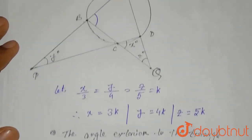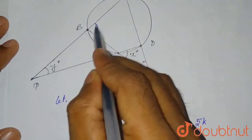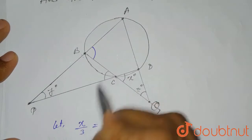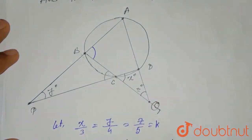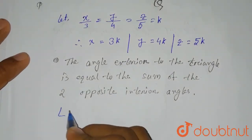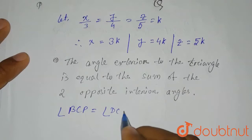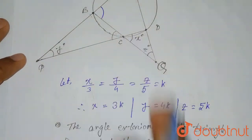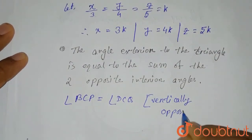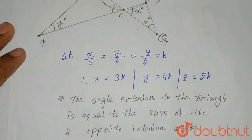We consider triangle BCP. The exterior angle ABC equals the sum of the two opposite interior angles. Angle BCP equals angle DCQ because they are vertically opposite angles, so angle BCP = x degrees.